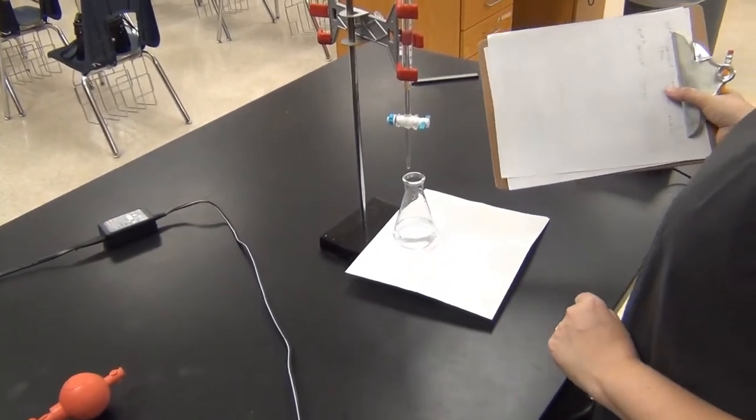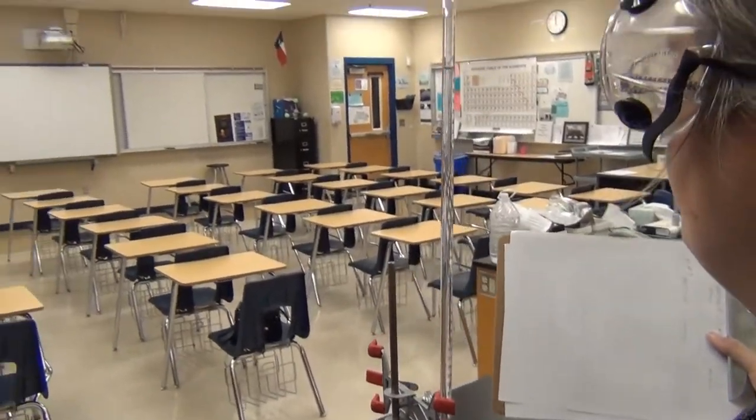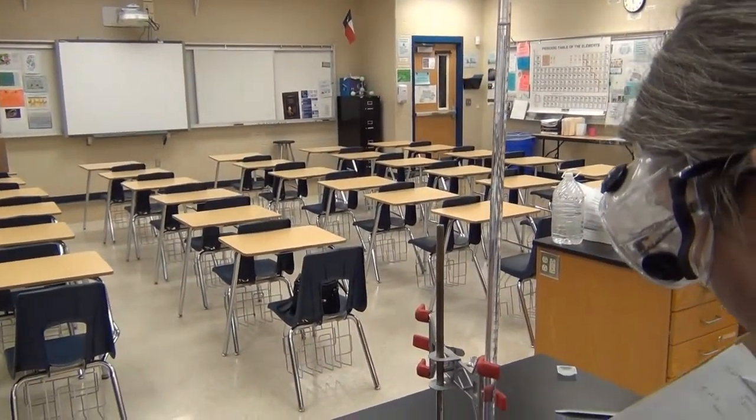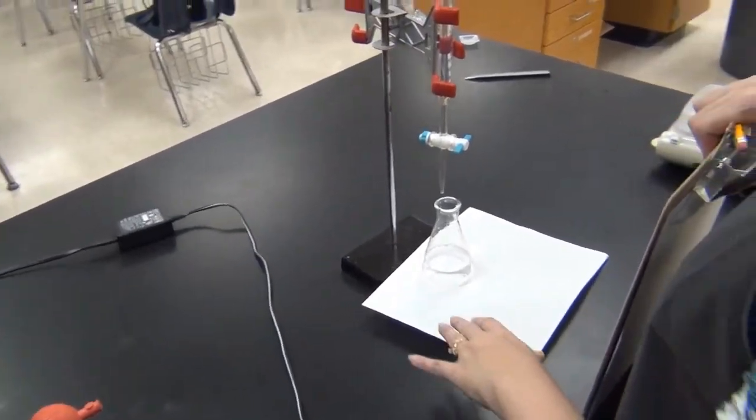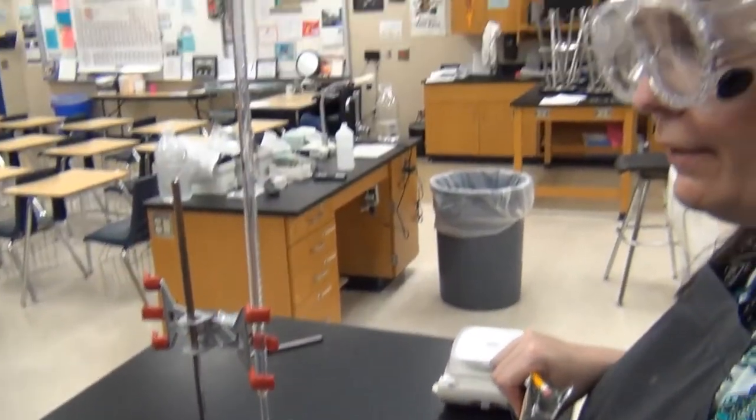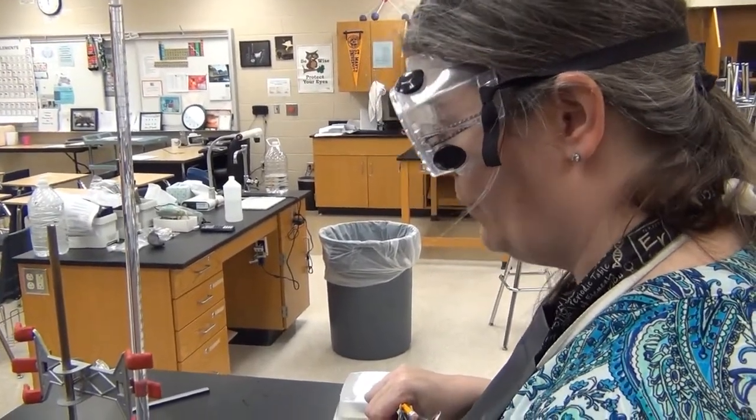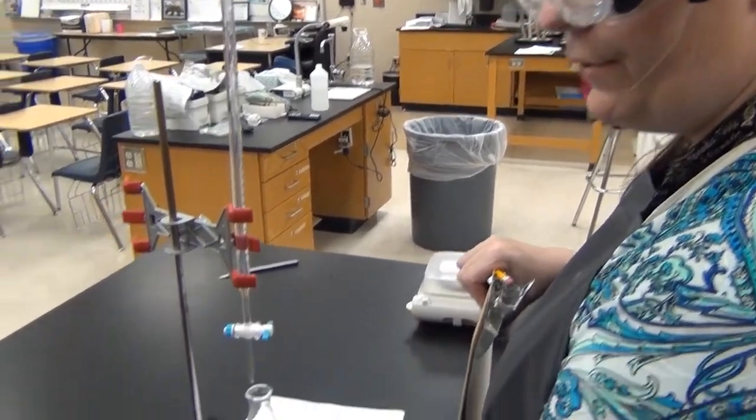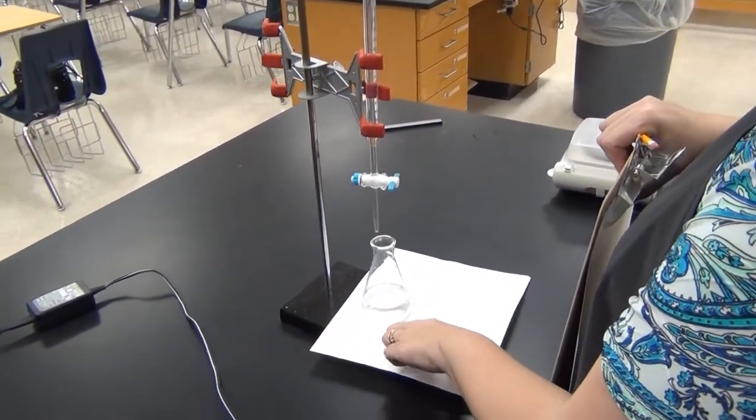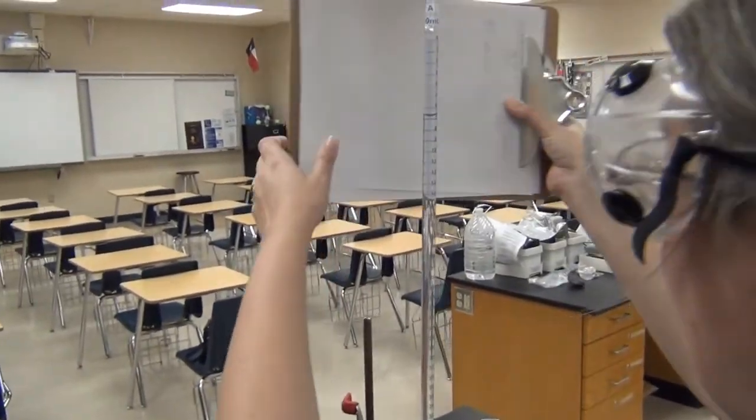We have our last unknown acid sample all queued up and ready to go. I've added the indicator, so we just need our starting volume of our titrant. For the analyte, we again put twenty five point zero zero milliliters of acid into the flask with a little bit of water and an indicator.